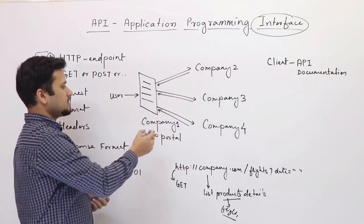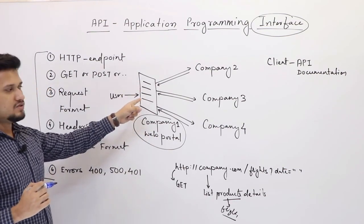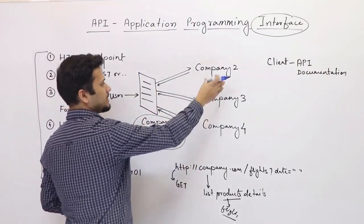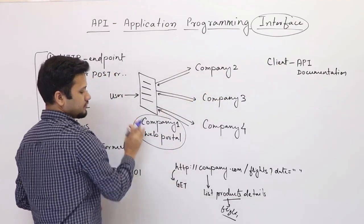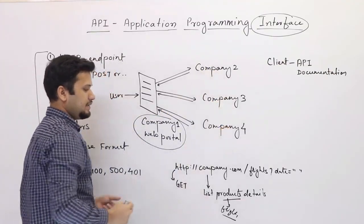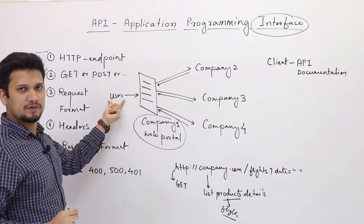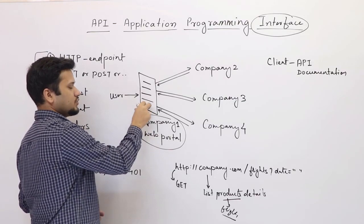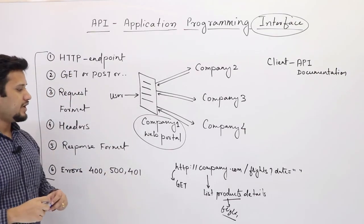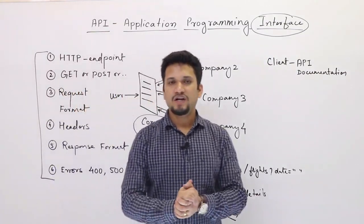Suppose you are an aggregator company with a web portal where users can see flights from various companies. A user comes in, puts a date, and you call the API which one company has provided — this returns a list of flights. Similarly, another company also provides an API which you call. So you can call multiple companies' APIs, and using all three companies' data you can show results to the user. This way one web system resource can talk to another service, and we can develop a very hybrid system. That is why API plays a very important role in modern web development.